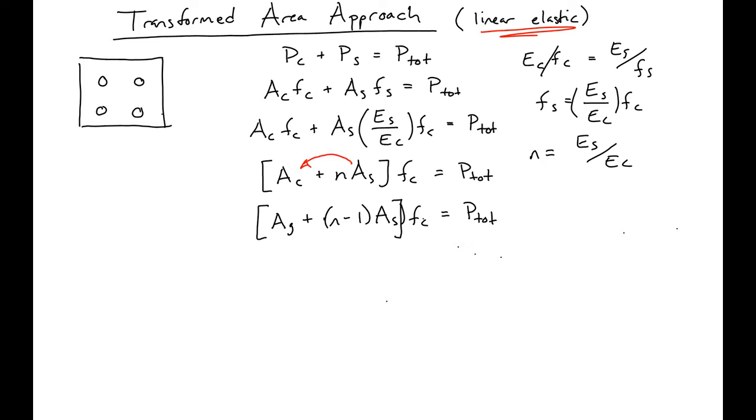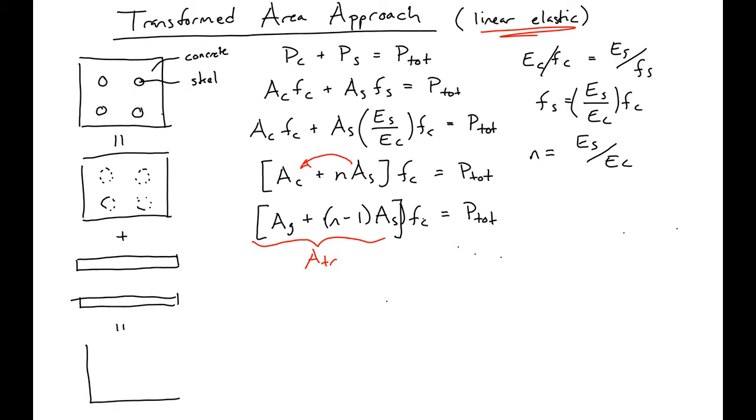So what we're essentially doing—and this is the transformed area—is we're saying before we have a concrete material, we have a steel material. We're saying that this equals our concrete material plus a transformed area, or an equivalent area, of our steel material, which will give us our final transformed section that we can use, or we can assume is all concrete and treat as all concrete.